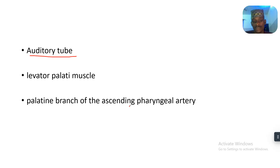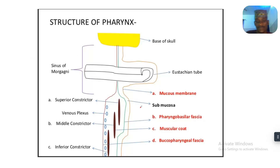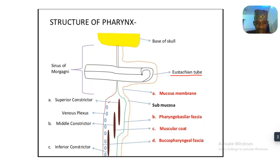Then we have the palatine branch of the ascending pharyngeal artery. This is the superior constrictor muscle that we are talking about, and it's the base of the skull.